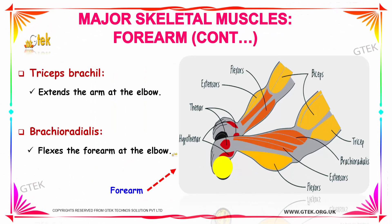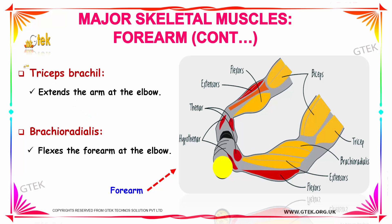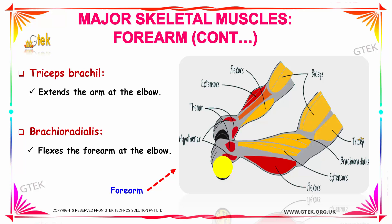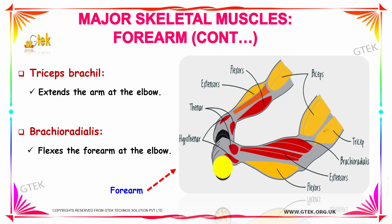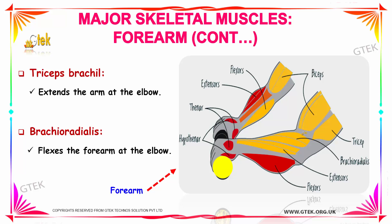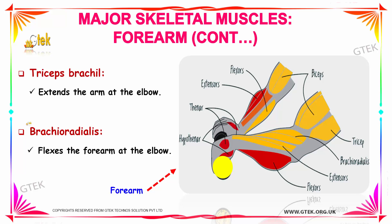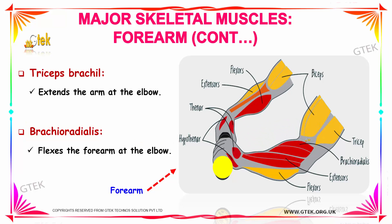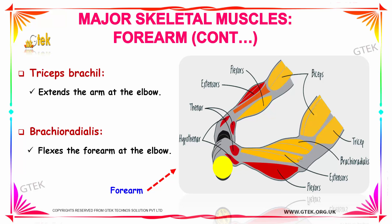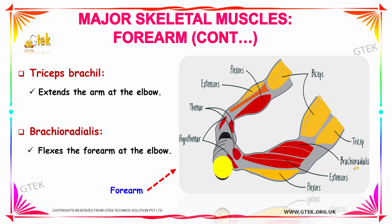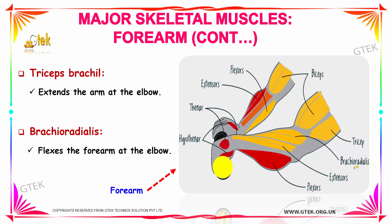Our next important muscle in the forearm is triceps brachii. Your triceps brachii is located here and it extends the arm at the region of your elbow. The next muscle is brachioradialis, which flexes the forearm at the elbow.